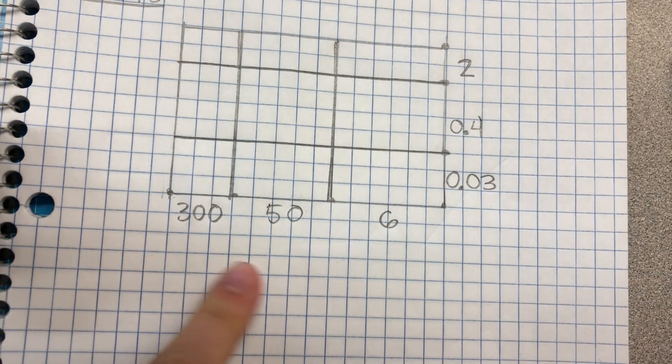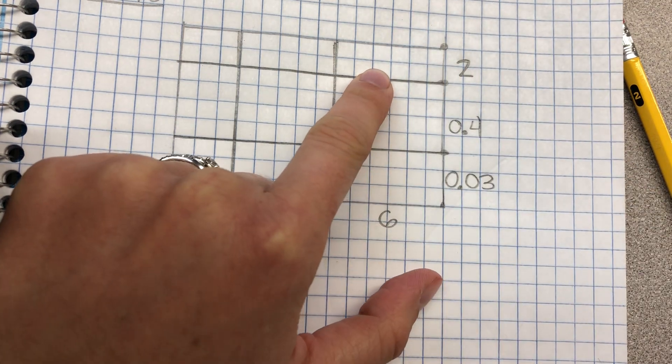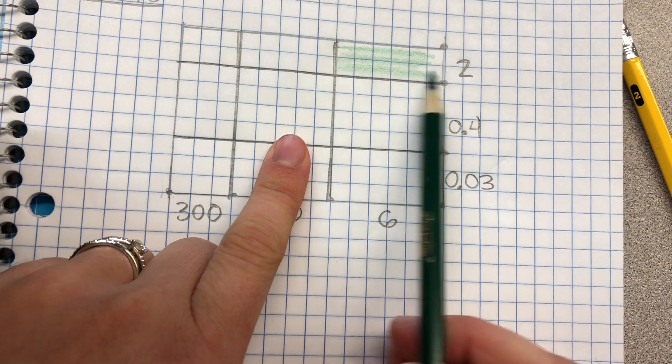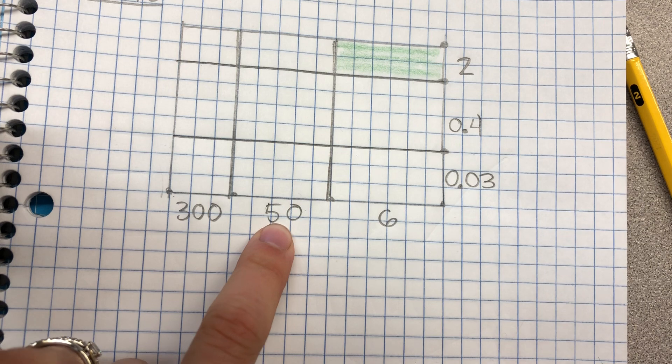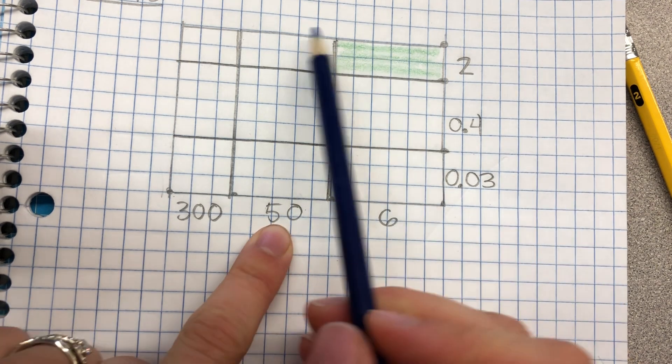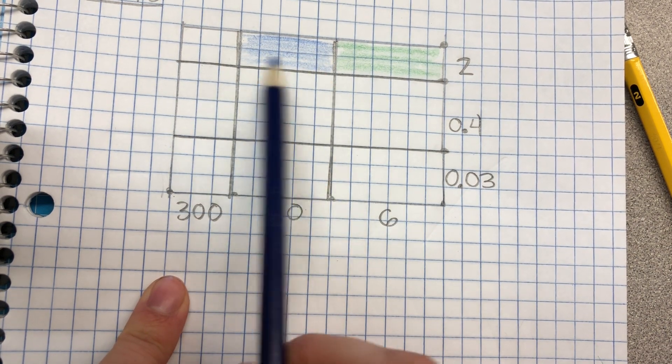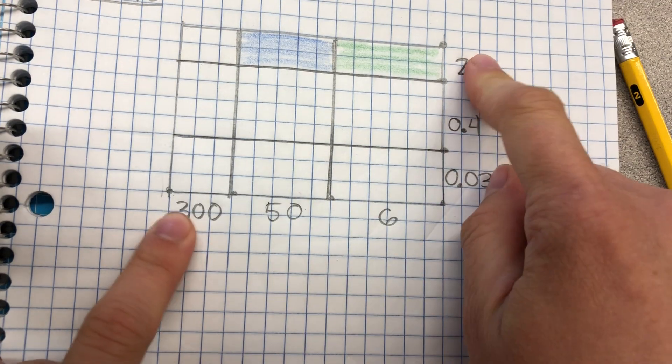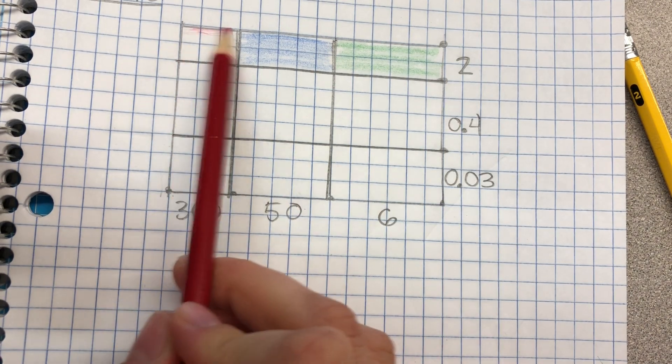So let's start with the easy stuff. We know if we multiply a unit times a unit, we're going to get a unit. So I'm going to shade that in green. Then when we multiply a 10 times a unit, we get a 10. So I'll shade that in blue. And then if I multiply a 100 times a unit, I get a 100. So I'll shade that in red.